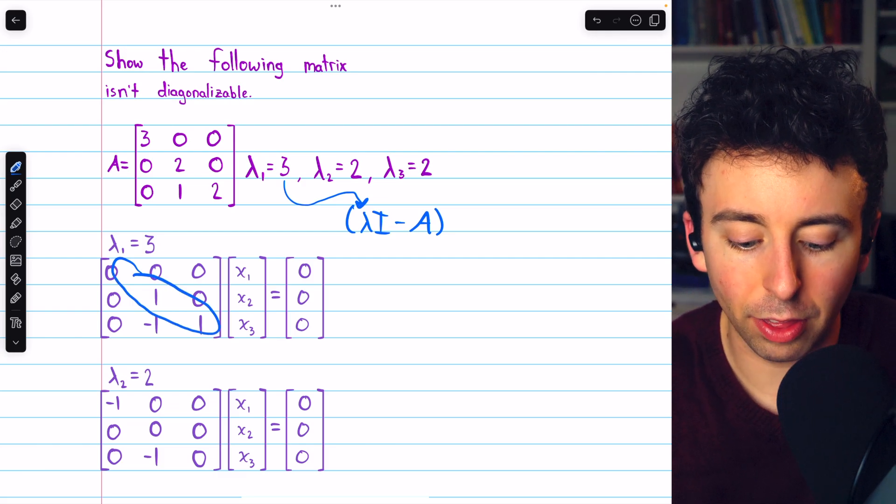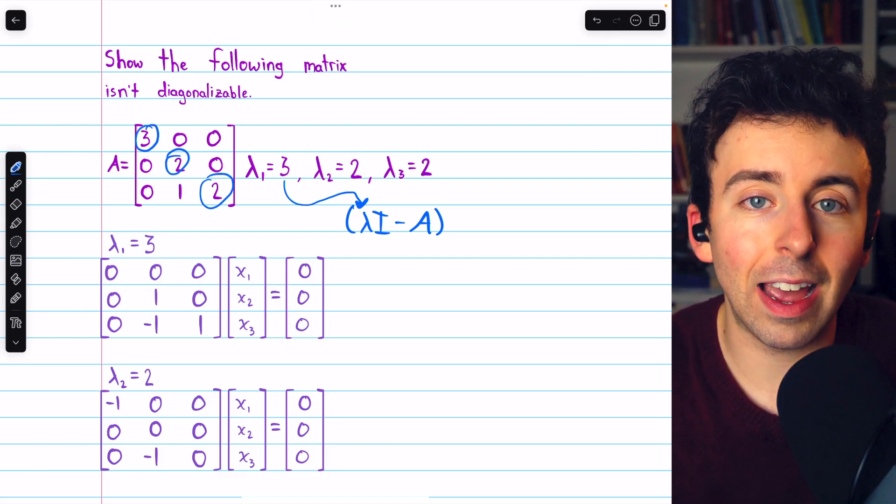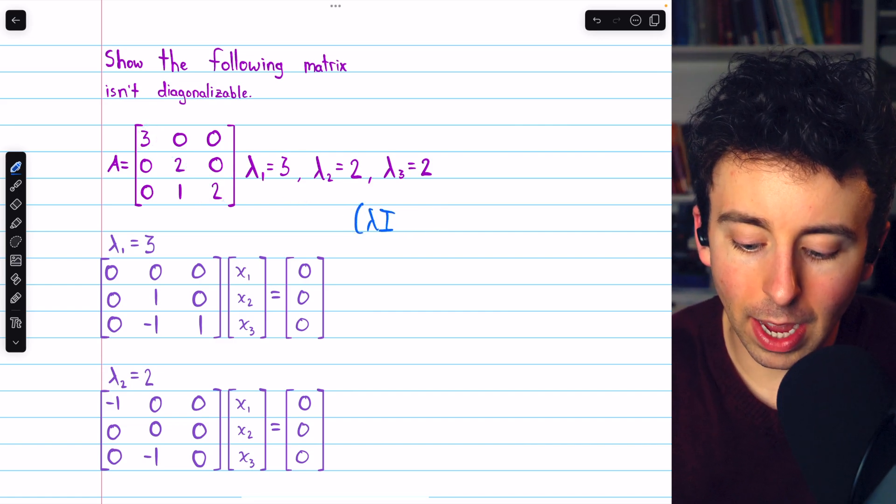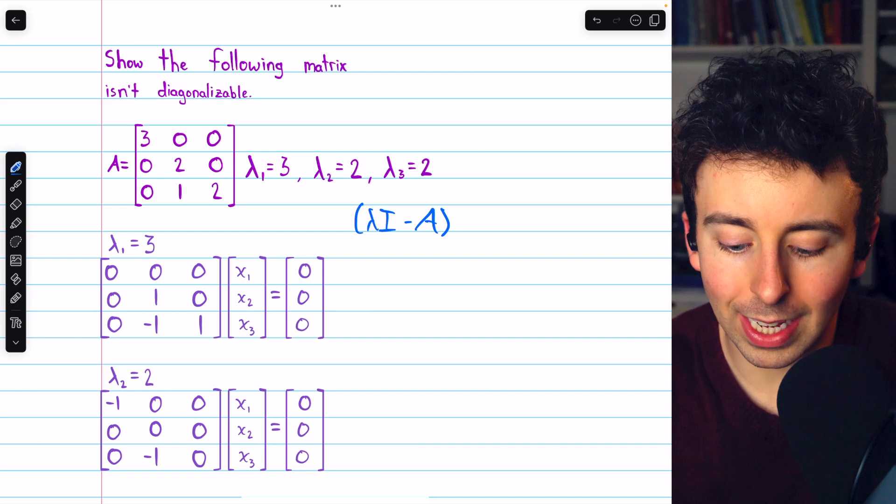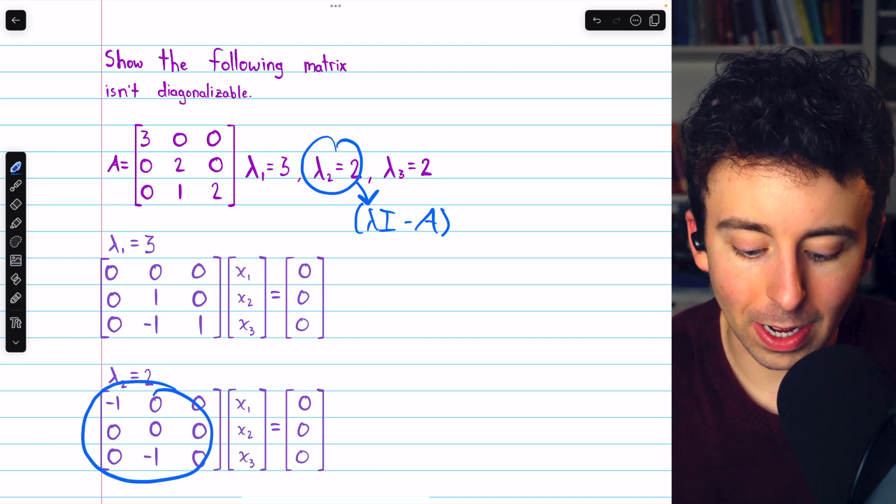So on the diagonals we have 3 minus the diagonal entries of A, and everywhere else we just have the negative entries of A. Similarly, if we take lambda I minus A and plug in this other eigenvalue, we get this coefficient matrix.